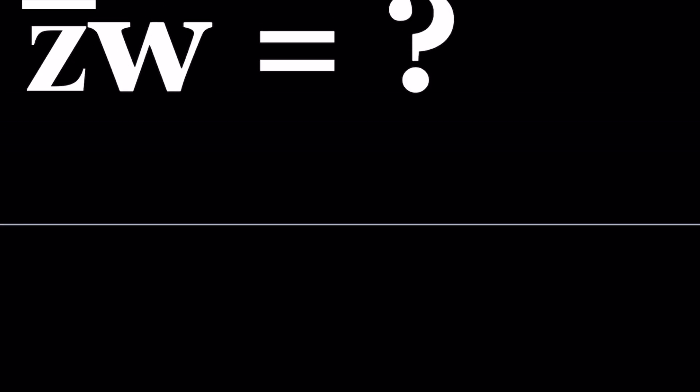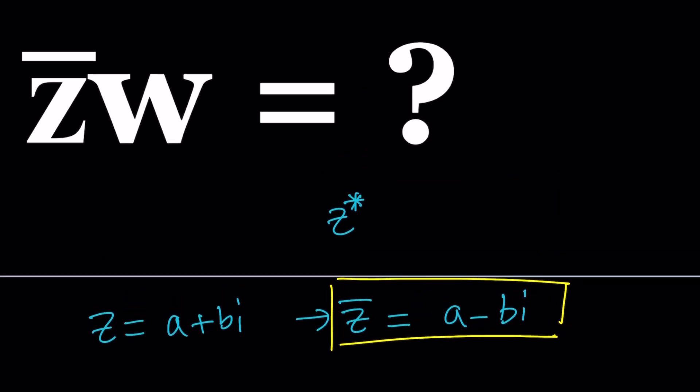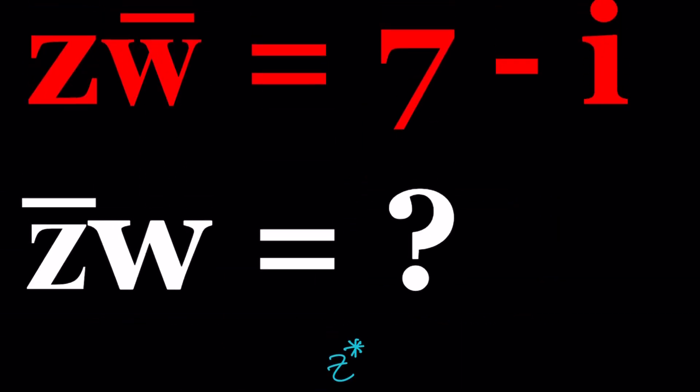First, let's talk about the definition of Z bar or W bar. If Z is a complex number written as a plus bi, then Z bar (Wolfram Alpha writes it with a star, but Z bar is the more common form) is defined as a minus bi. If you negate the imaginary part of a complex number, you get the complex conjugate. By using that definition, we'll be able to solve this equation.